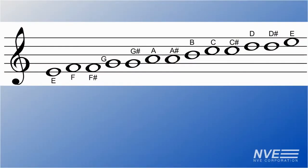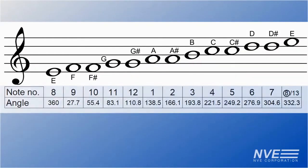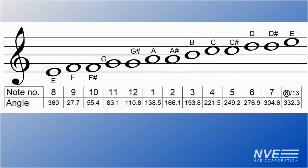These are the 13 pitch pipe notes with the corresponding pitch pipe position and angle of rotation. Pitch pipes come in various keys. We selected key of E to cover the treble clef E4 to E5.